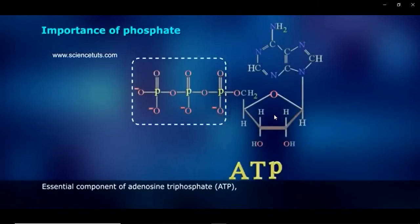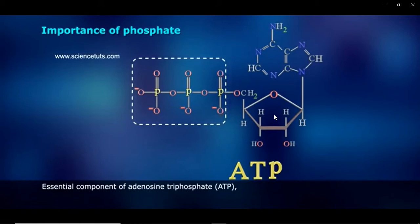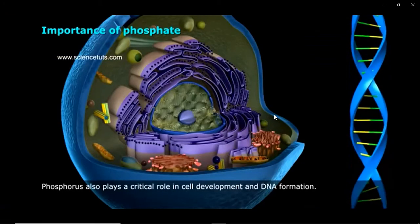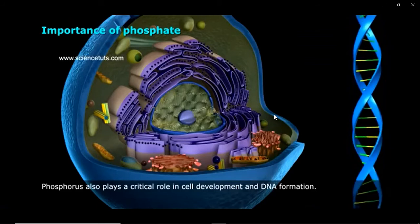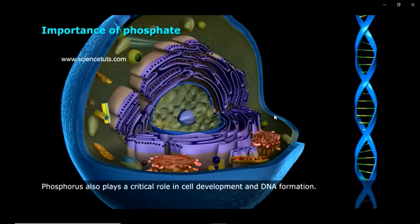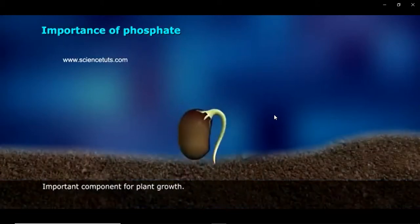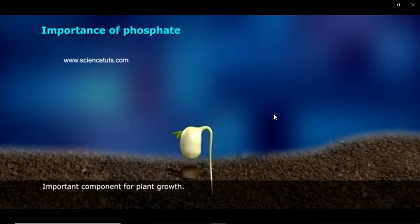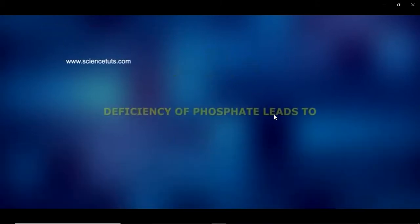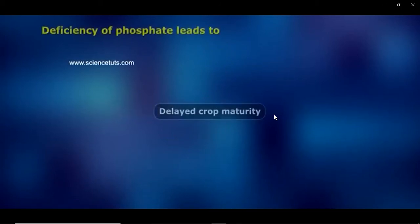Phosphate is an essential component of ATP — that's adenosine triphosphate. Phosphorus also plays a critical role in cell development and DNA formation. As you can see, it is an important component for the growth of plants.